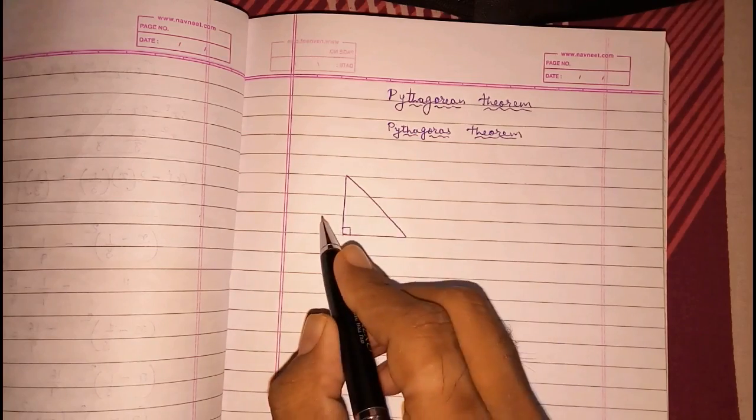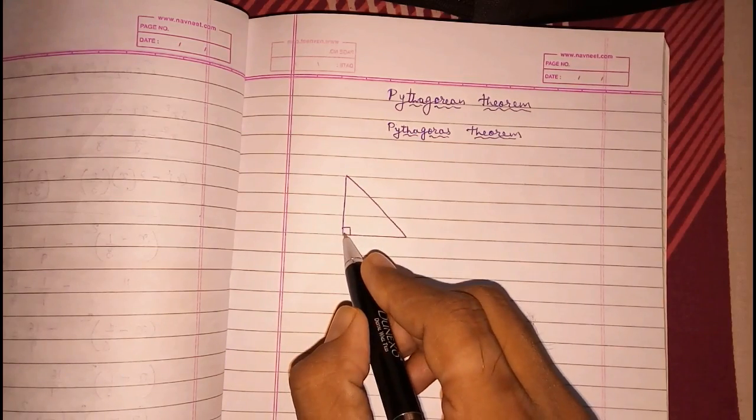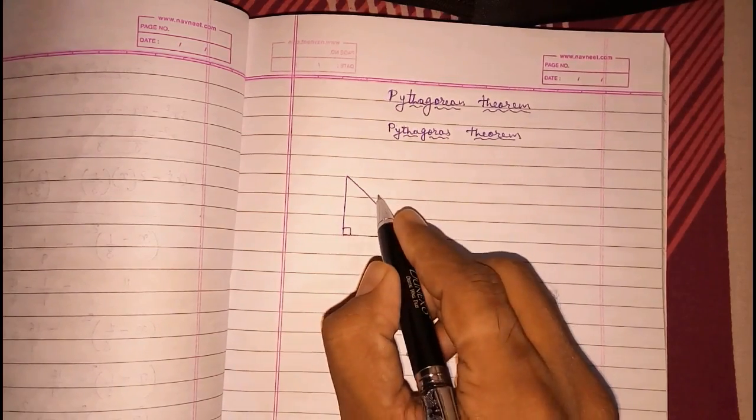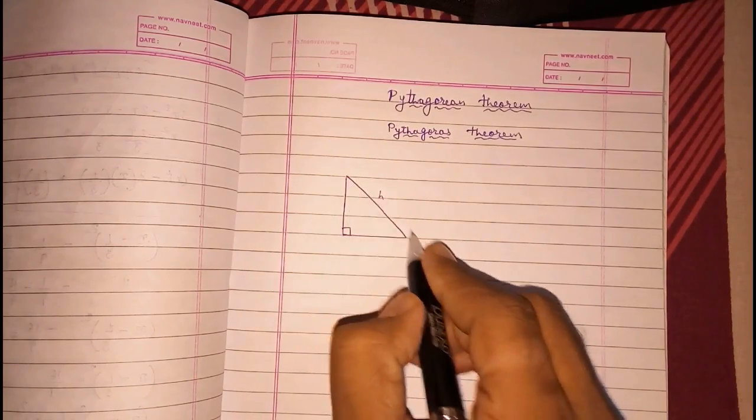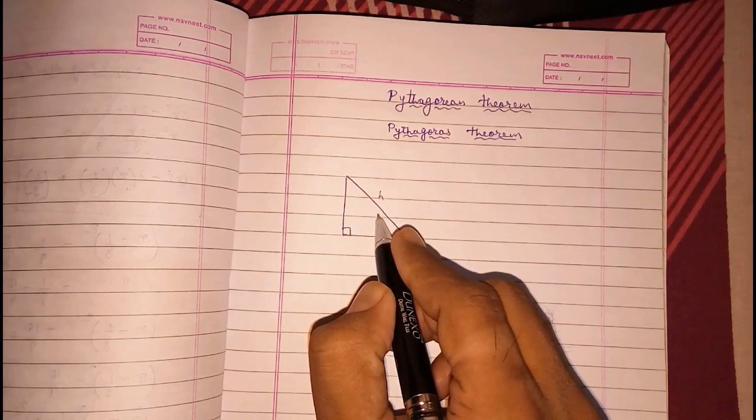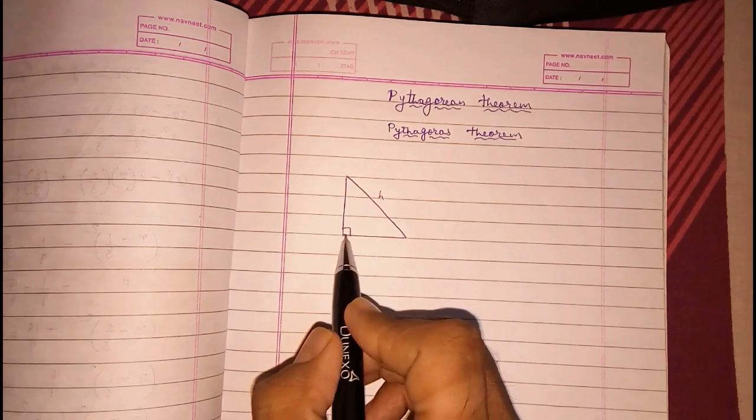Now there are three sides. They have different names. If this is a right angle triangle, the opposite side of the triangle, or the greatest or the longest side, is always hypotenuse.